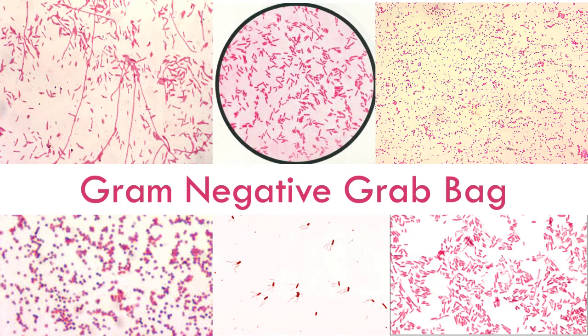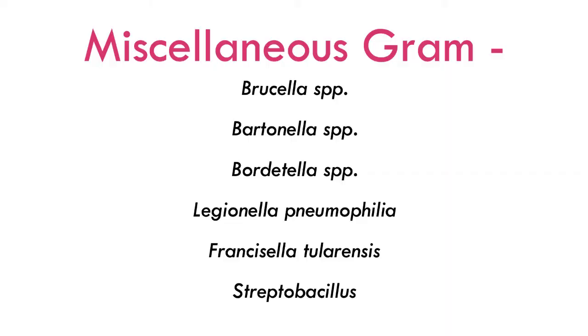This video today is truly a gram-negative grab bag — a selection of organisms that are similar but not really similar, kind of fastidious but kind of aren't. The organisms we're going to be looking at today are the Brucella species, the Bartonella species, Bordetella species, Legionella pneumophilia, Francisella tularensis, and Streptobacillus.